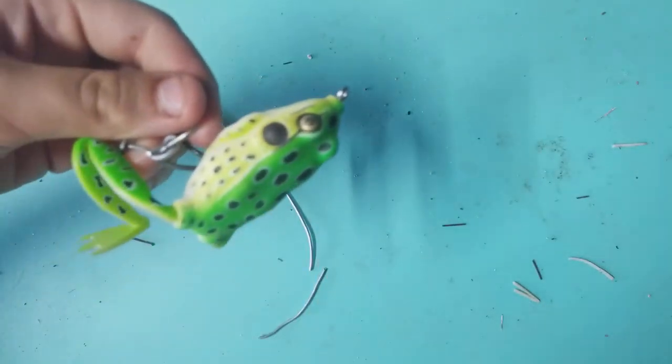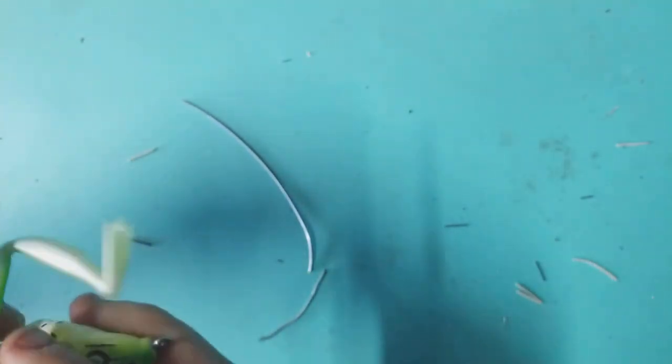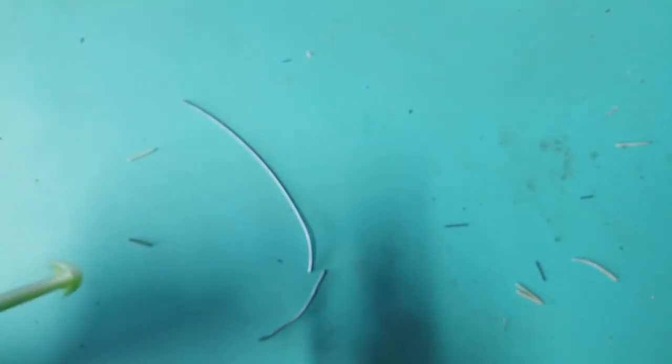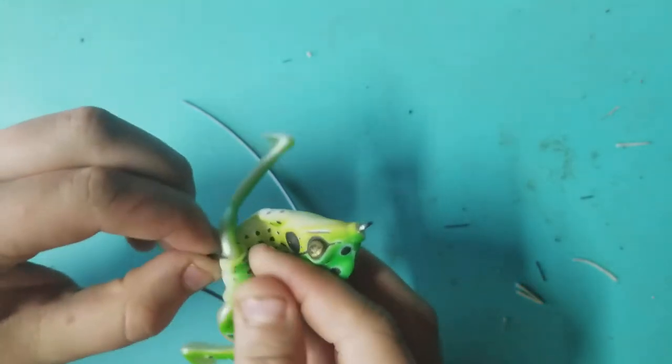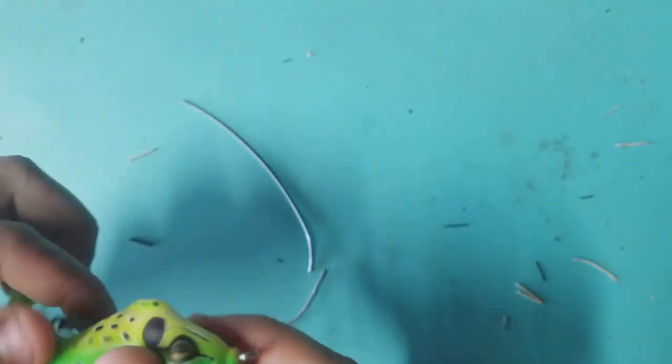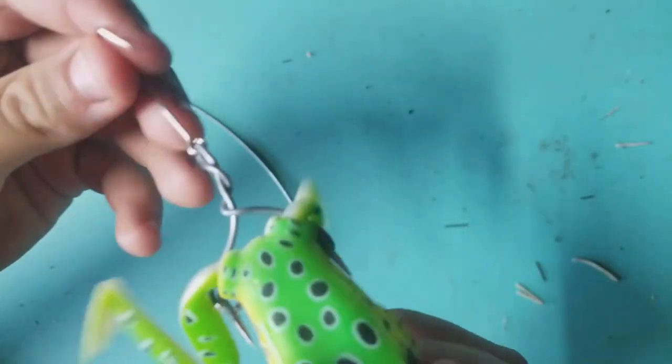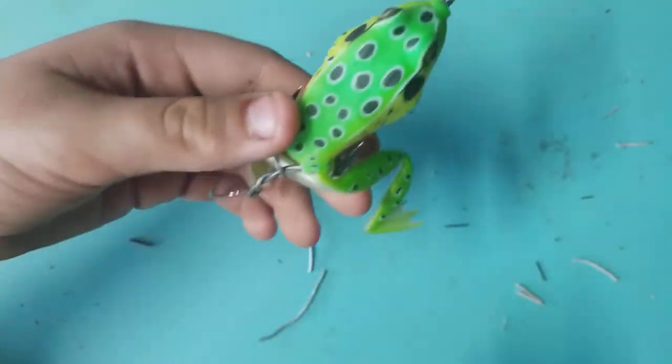Then, after that, just switch the hooks on your frog around like so. And then, the stinger should be coming out right at the end.